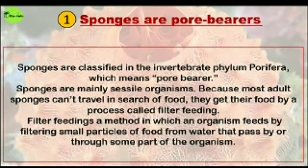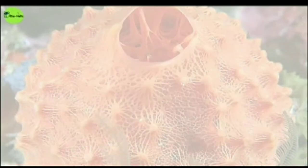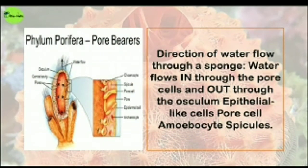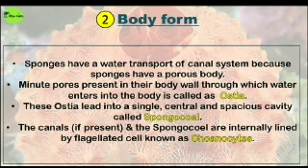Now let's see the direction of water flow through the sponge. Water flows in through the pore cells and out through the osculum. The body wall contains porocytes, amebocytes, and spicules.